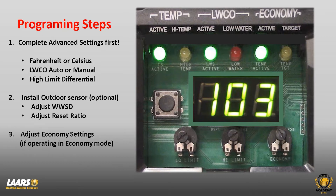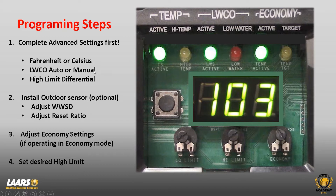Step three is adjusting the economy settings. If you're not utilizing step one or two, skip those and go right to step three: adjust economy settings for thermal targeting. Lastly, set your desired high limit. The reason it's last is that the middle dial is a potentiometer — if you set it for 200 degrees, then make other changes and have to turn it again, your high limit may shift to 160, causing short cycling. So the high limit is always done as the last step.